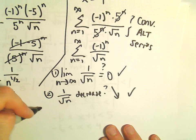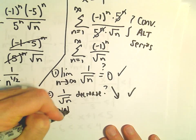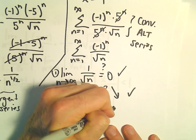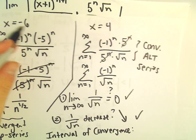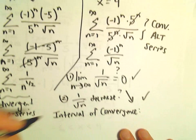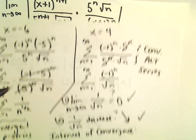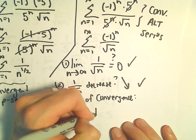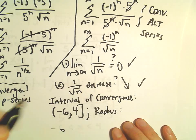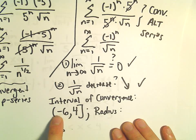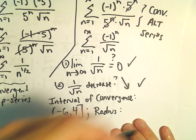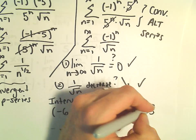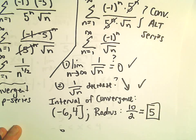That tells us the interval of convergence is from negative 6 to positive 4, where negative 6 is not included but positive 4 is included. The radius of convergence: the length of this interval from negative 6 to positive 4 is 10, and dividing by 2 gives us a radius of convergence of positive 5.